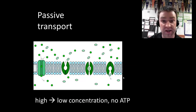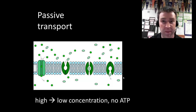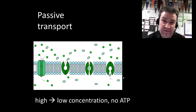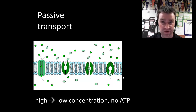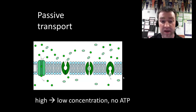Sometimes cells are content to let particles move in their natural direction. This would be an example of passive transport — the cell can afford to be passive. It doesn't have to do anything; it can just let the particles move from high to low concentration. Another way of saying that is going down the concentration gradient. No ATP energy is required because the particles are doing what they would naturally do anyway.